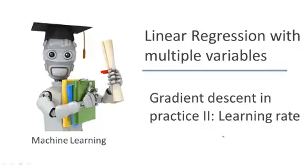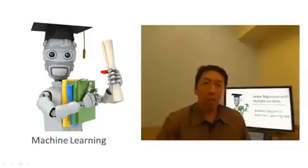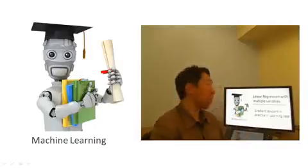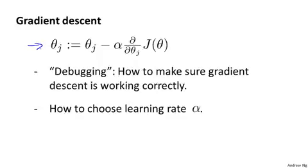In this video, I want to give you more practical tips for getting gradient descent to work. The ideas in this video will center around the learning rate alpha. Concretely, here's the gradient descent update rule, and what I want to do is tell you about what I think of as debugging and some tips for making sure that gradient descent is working correctly. Second, I want to tell you how to choose the learning rate alpha, at least how I go about choosing it.